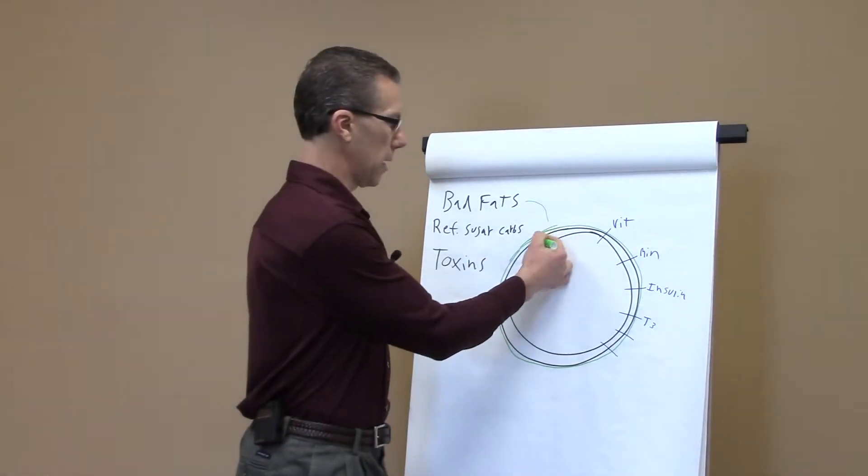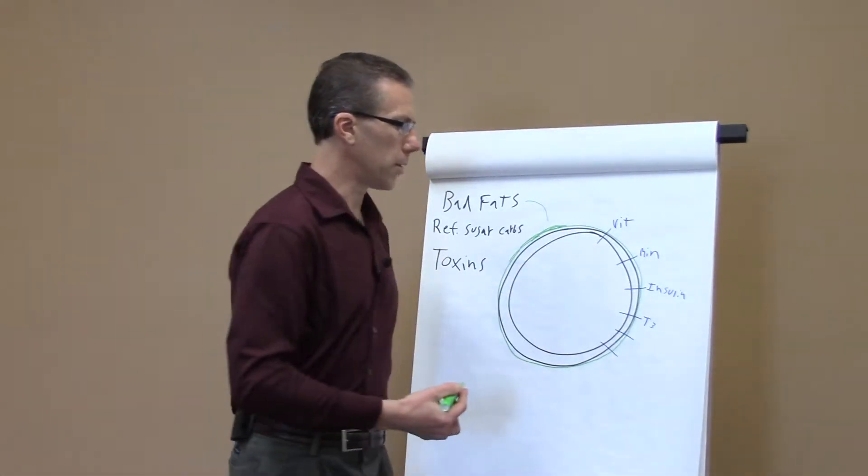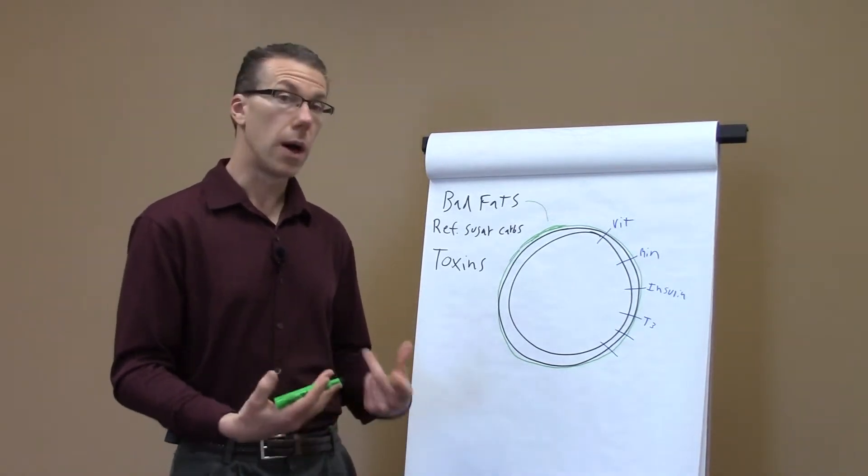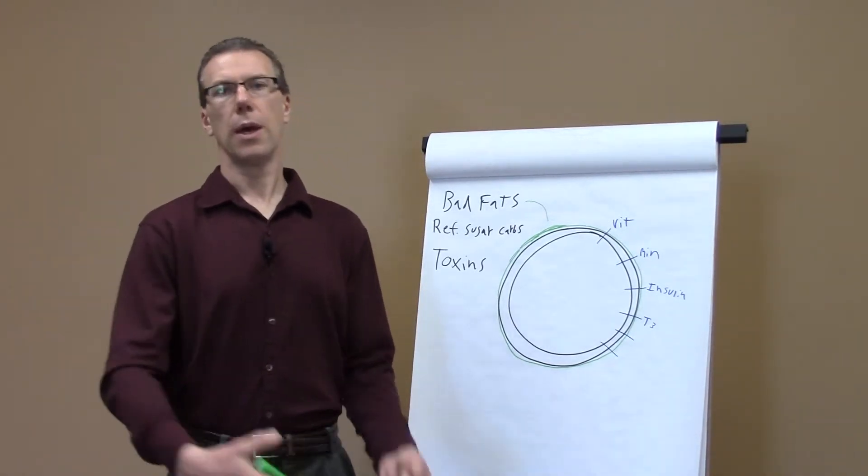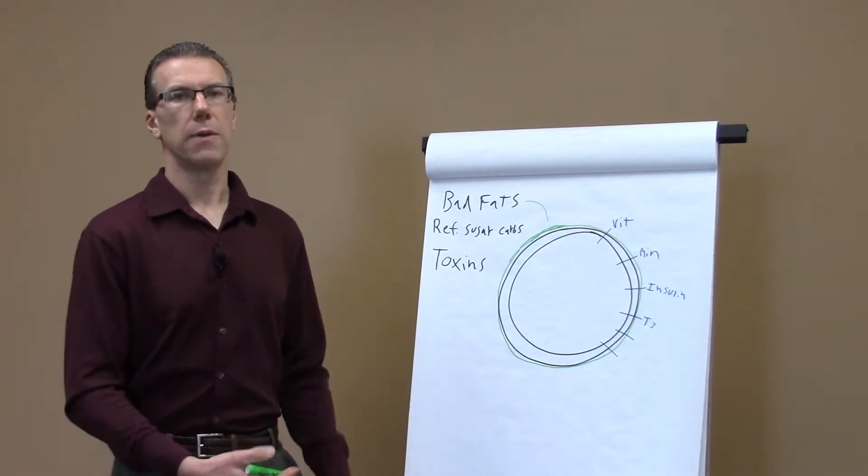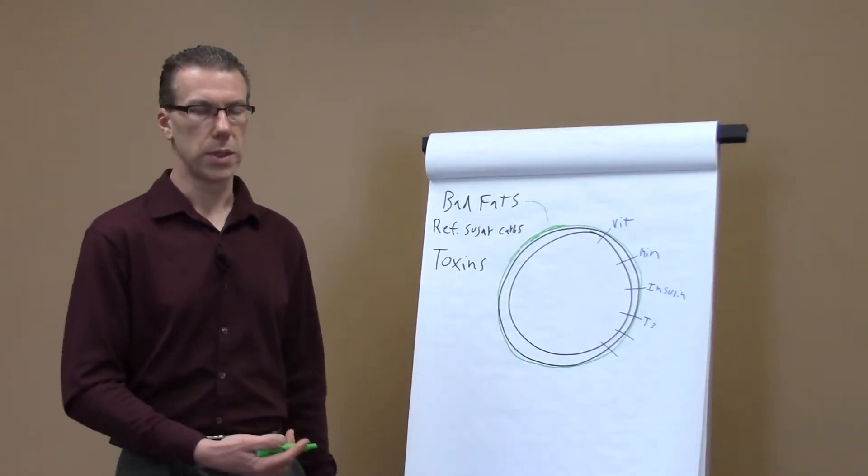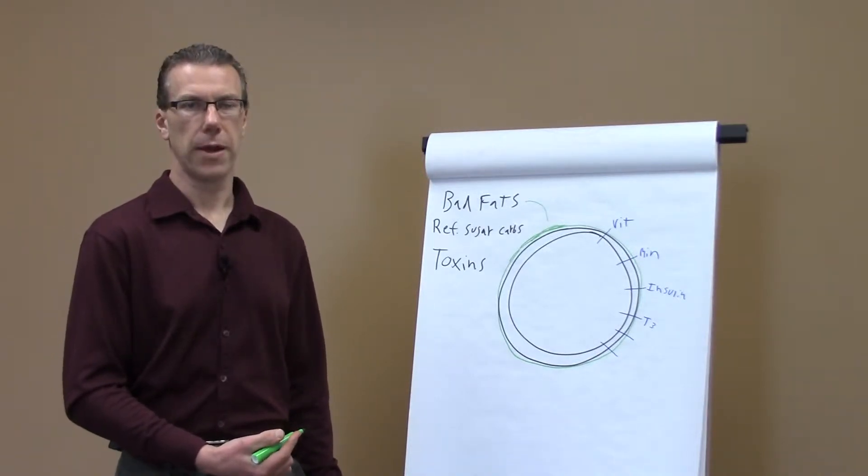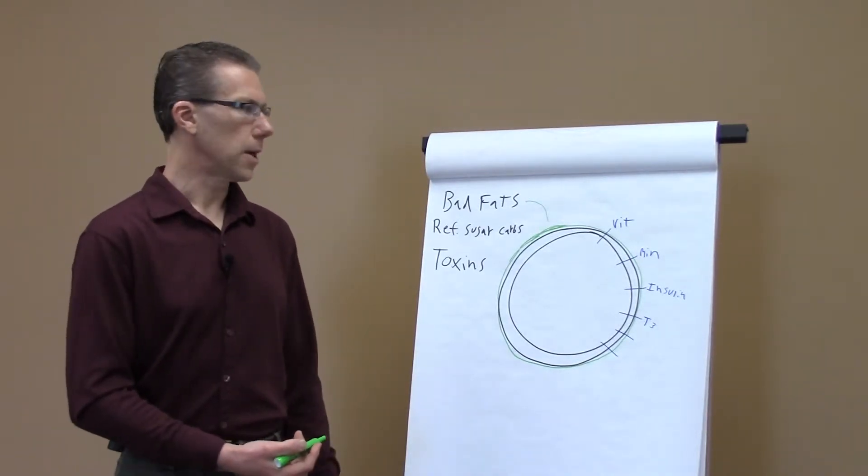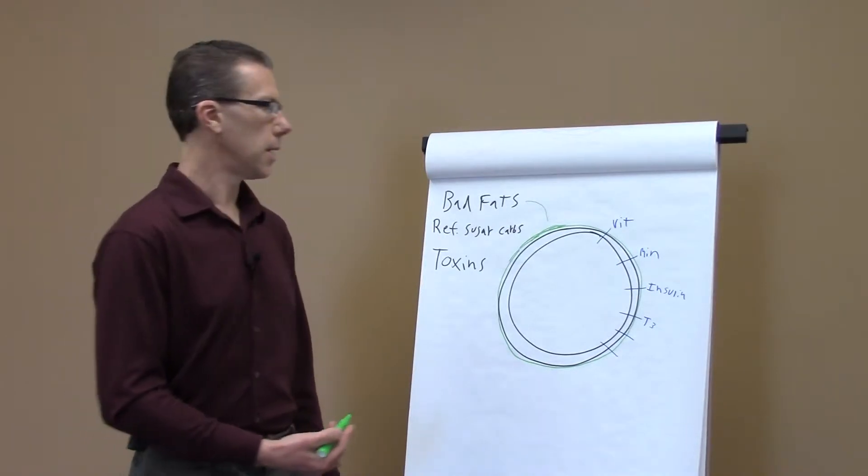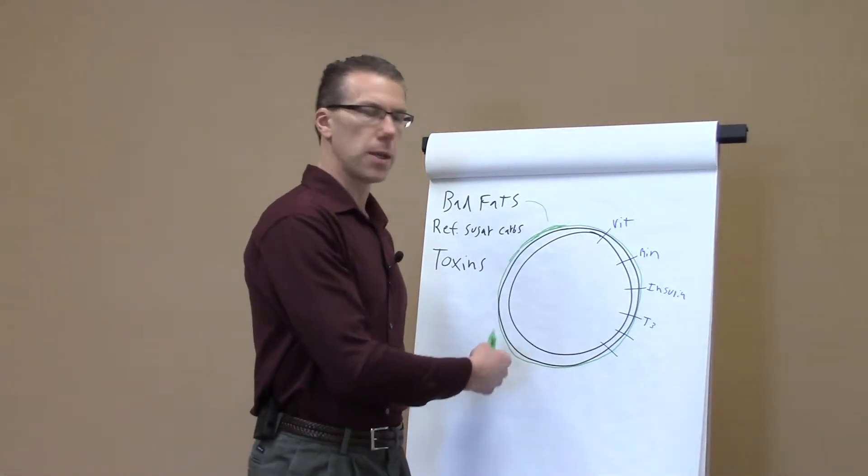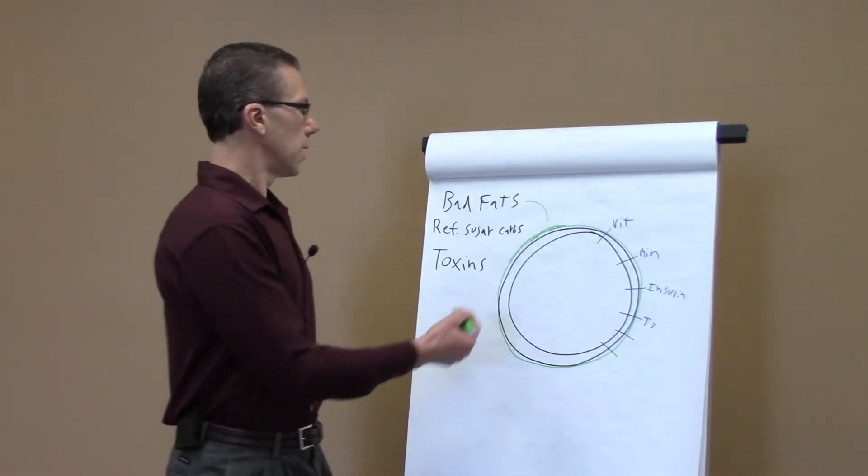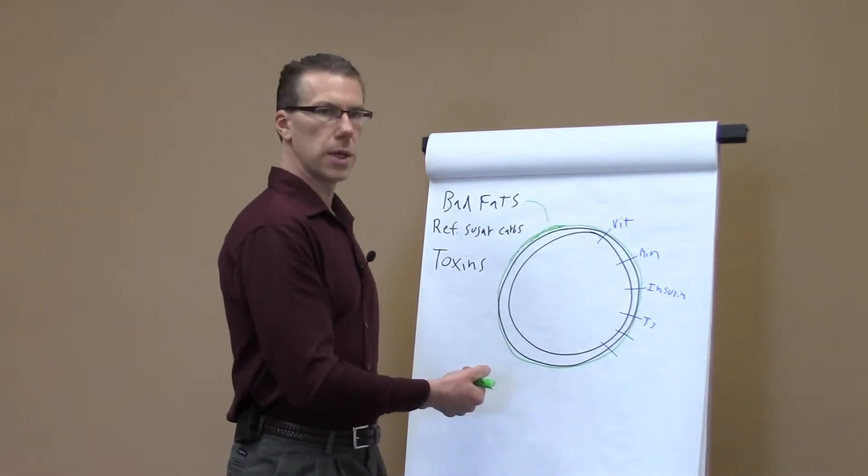Now with that in mind, the other thing is that these bad fats, the body doesn't know how to deal with them as well, so they can stay in the body for a long time. In fact, it's believed in research that there's up to a 52-day half-life for these fats, and they circulate throughout the body, and you can imagine if they stay in the body longer, they affect these cell walls longer.